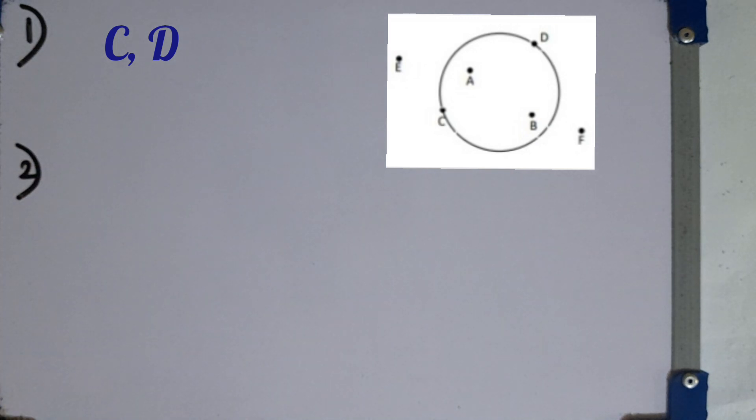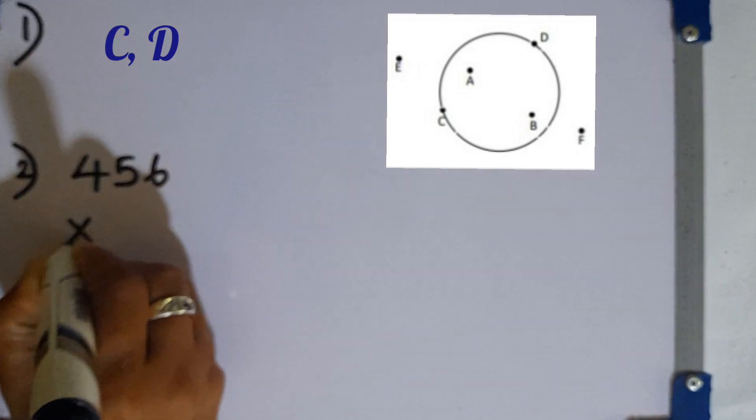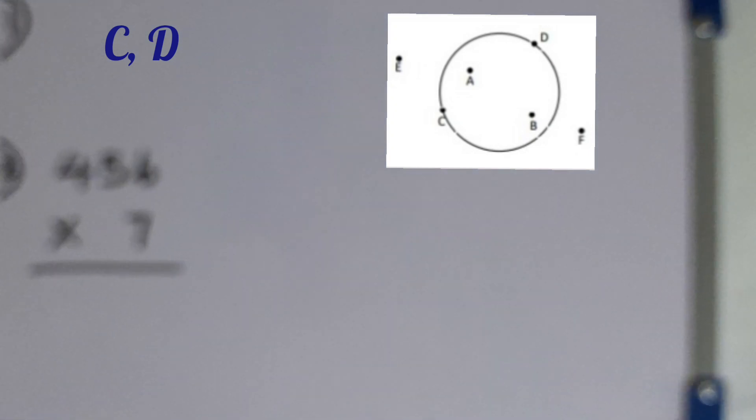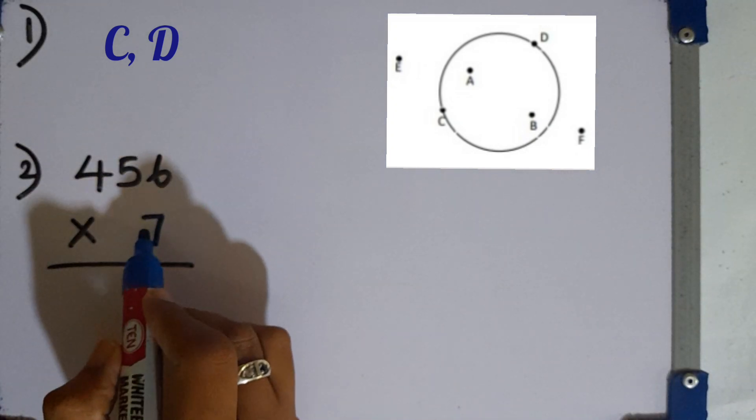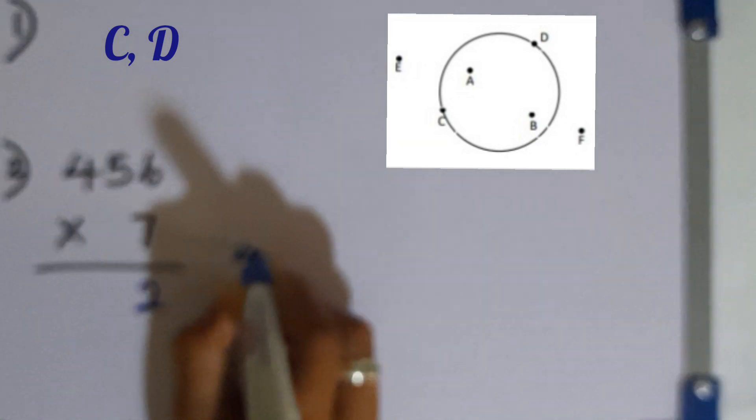Then second question. Find the value 456 multiplied by 7. We have to multiply each digit by 7 here. 7 times 6 is 42. 4 is remaining.